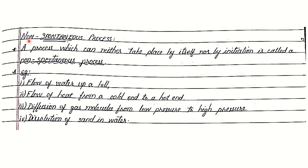What is a non-spontaneous process? A process which can neither take place by itself nor by initiation is called a non-spontaneous process. You cannot initiate a non-spontaneous process. Examples of non-spontaneous processes are: flow of water up a hill, flow of heat from a cold end to a hot end, diffusion of gas molecules from low pressure to high pressure, and dissolution of sand in water. Such processes will never happen by nature.